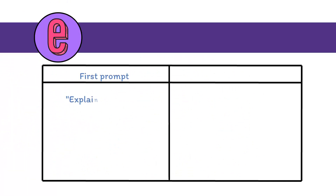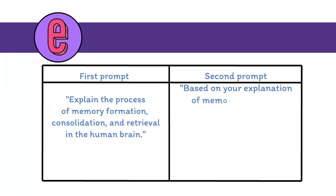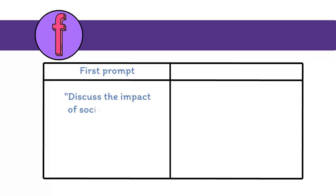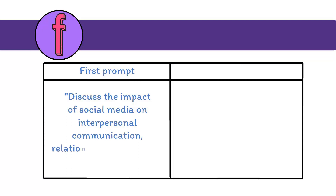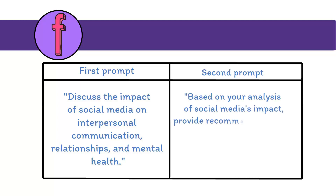E. First prompt: Explain the process of memory formation, consolidation, and retrieval in the human brain. Second prompt: Based on your explanation of memory processes, discuss the factors that influence memory performance and potential strategies for improving memory retention and recall. F. First prompt: Discuss the impact of social media on interpersonal communication, relationships, and mental health. Second prompt: Based on your analysis of social media's impact, provide recommendations for promoting healthy and responsible social media use.